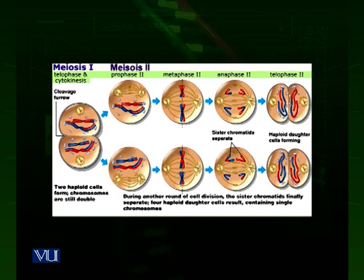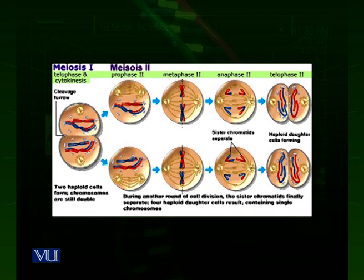So in meiosis I, one cell is divided into two, each with a half number of chromosomes. But both of these cells, the products of meiosis I, are individually divided by another phase called meiosis II. The end products of these two cells are four cells, all with a half number of chromosomes, because the reduction is already complete in meiosis I. This is how one mother cell in the germ line divides into four daughter cells — either sperms or eggs — each with a half number of chromosomes.